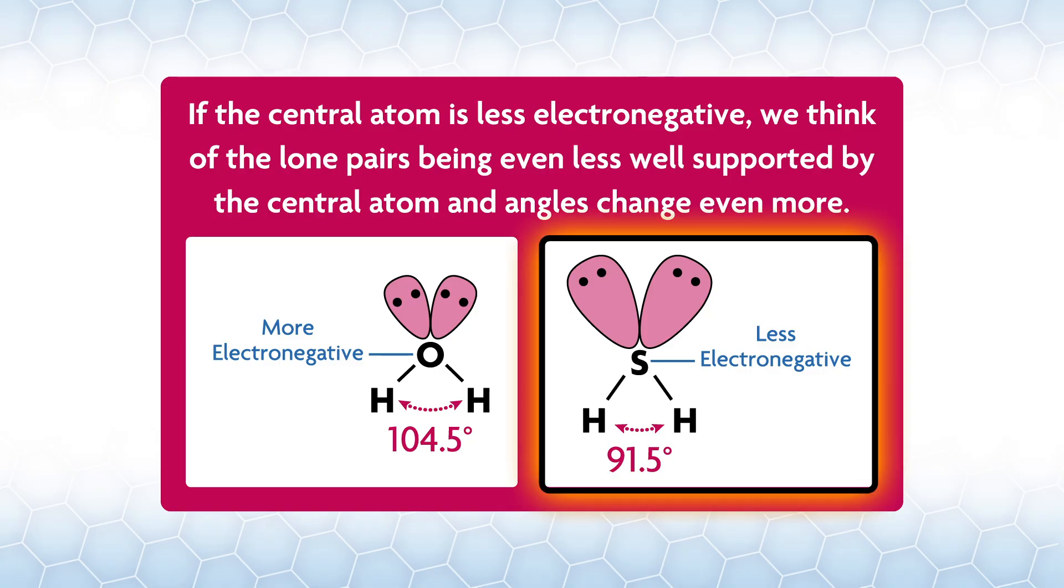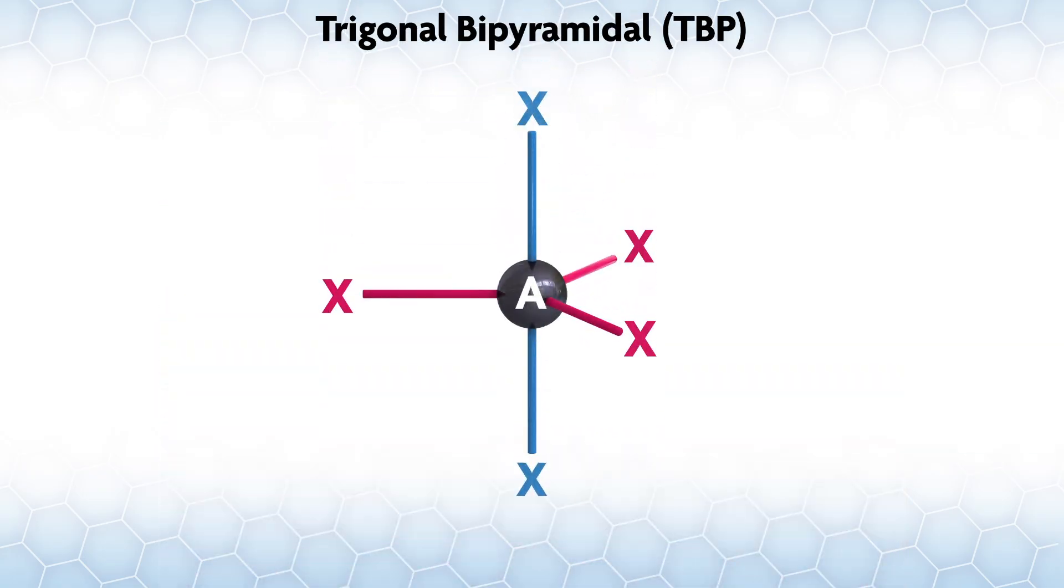For example, if we compare water and SH2, the less electronegative sulfur has larger lone pairs leading to a smaller angle between the hydrogens as they get pushed together by the large fluffy lone pairs.